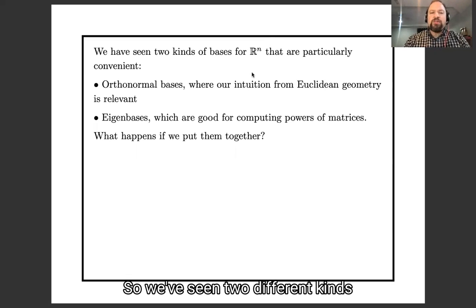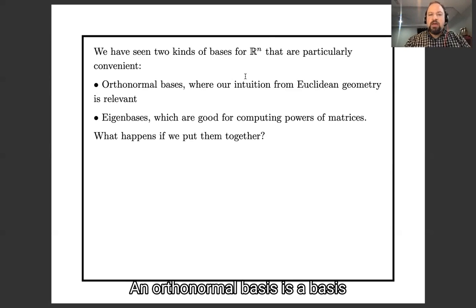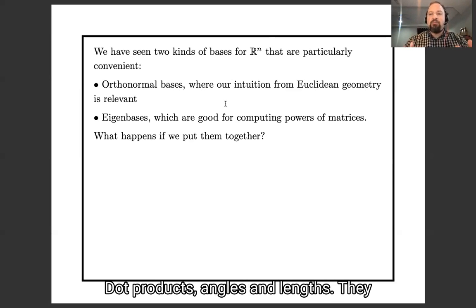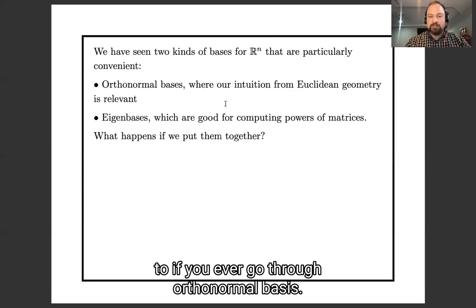We've seen two different kinds of bases which are very useful to work with. An orthonormal basis is a basis where everything in geometry works the way you think it does — dot products, angles, lengths — they all work the way you're used to if you have an orthonormal basis.